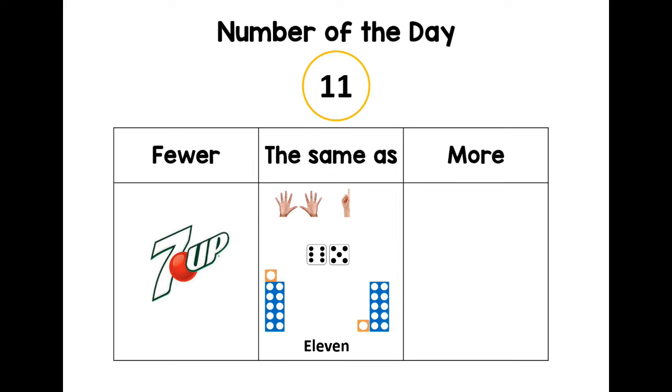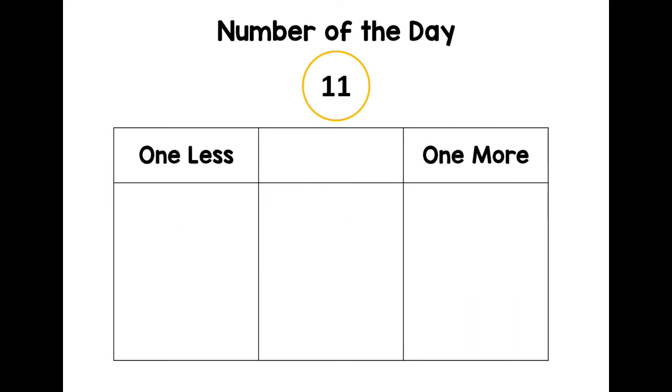If I have 11 cakes and you have more, how many might you have? Maybe 70—that's a big number. Okay, our number of the day is 11.